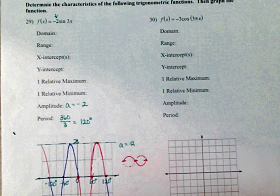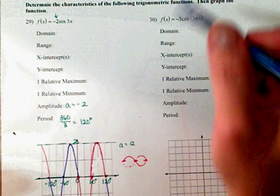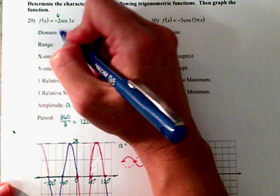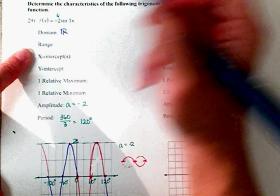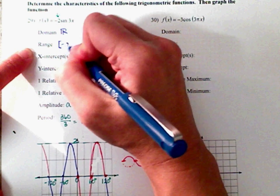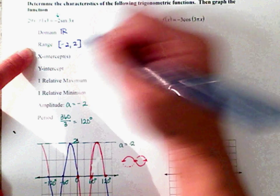Alright, here we go. Domain. Far left to far right. All real numbers. Your range. From negative 2 to positive 2.